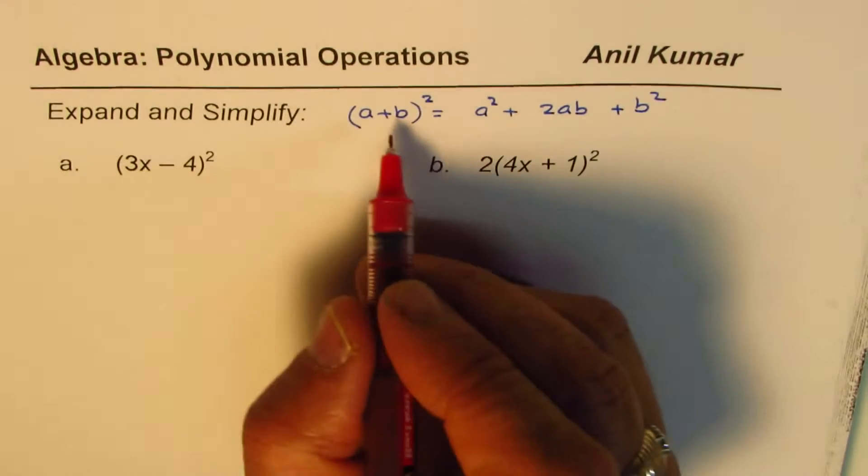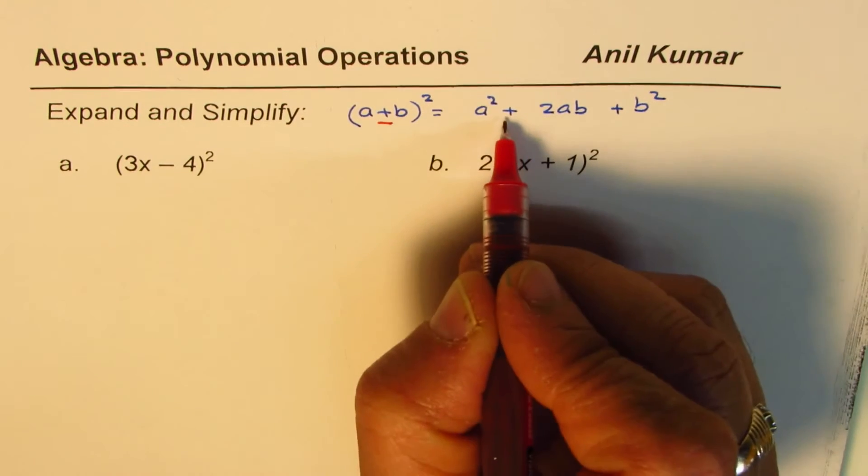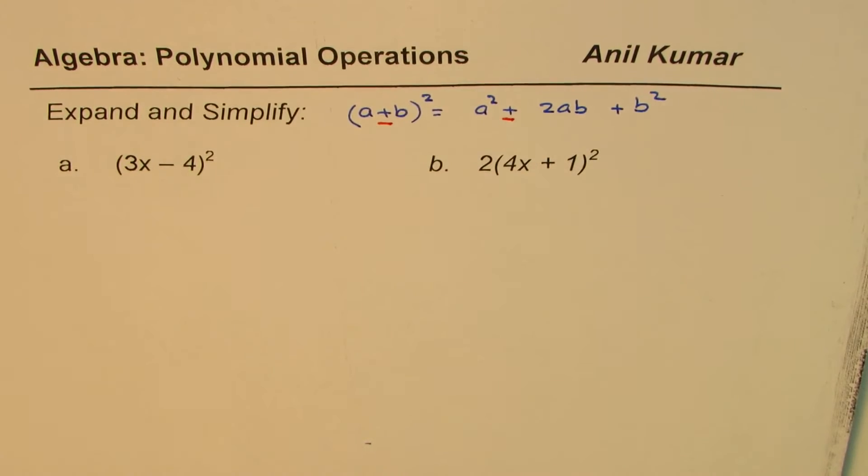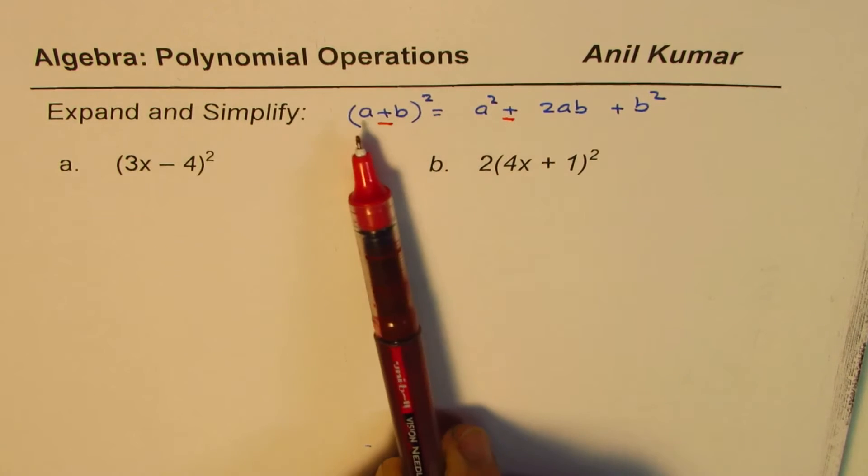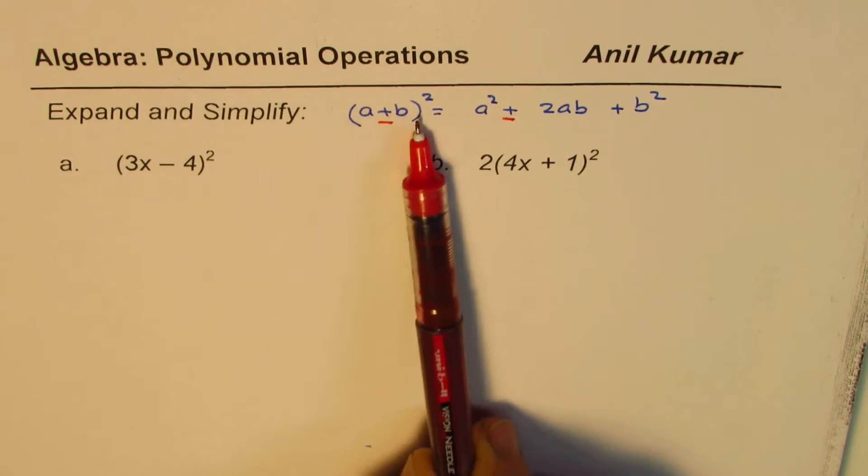So we'll apply this formula to expand the given expressions. If it is minus here, then we just have to change the expression to a² - 2ab + b². You can also check that this is the expression by multiplying (a+b) by (a+b).